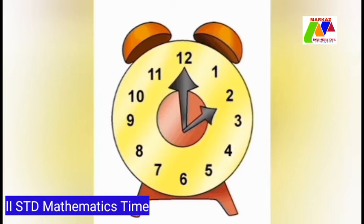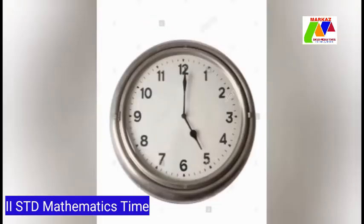The minute hand moves faster and it takes 1 hour to go around the clock. It starts at number 12 and goes around to get back to 12 in 1 hour. At the same time, the hour hand takes 1 hour to move from one number to the next. Here is an example: the short hand is at 5 and the long hand is at 12.